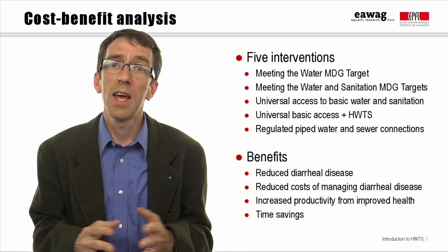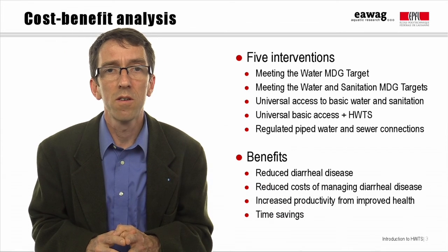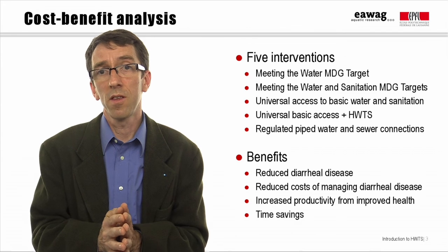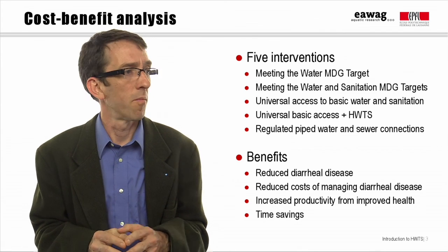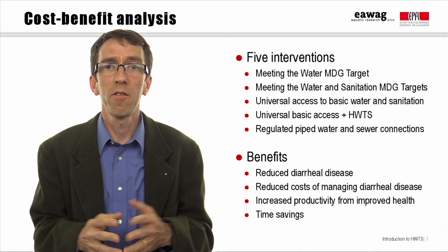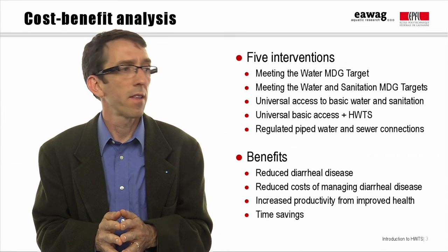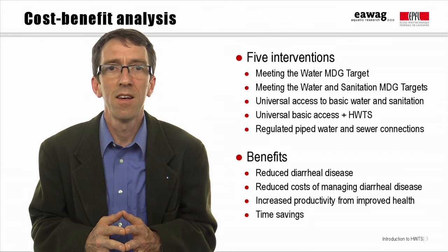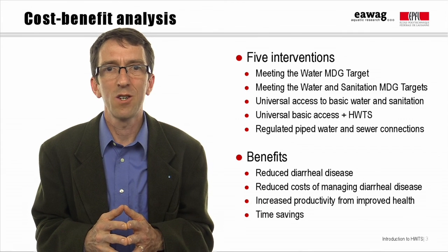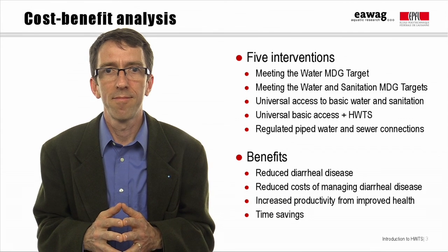Economic benefits included money saved by not having to manage diarrheal disease — savings for the individual household or the healthcare sector — increased productivity resulting from improved health, and time savings from not having to travel long distances to access water and sanitation facilities. The authors found that WASH interventions were highly cost-beneficial; that is, the benefit-cost ratio was above one in all cases, and in some cases was very much larger.